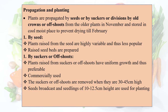Plants are propagated by seeds, by suckers, or by division of old crowns, or offshoots from older plants collected in November and stored in cool moist places to prevent drying till February.